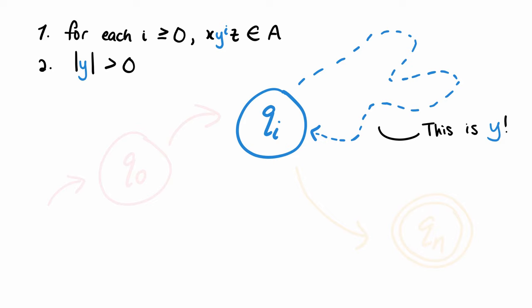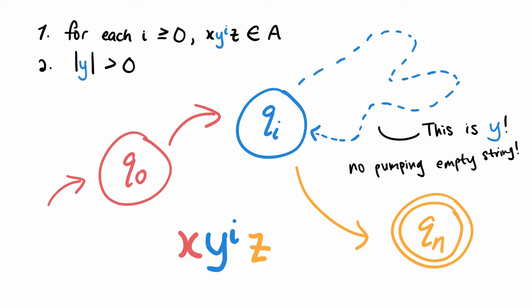The second point says that the length of Y has to be greater than 0, which means we cannot pump the empty string. So if we look at each string as three parts X, Y, Z, the part Y being pumped cannot be empty, but X and Z which are the parts before and after the pumped string can be the empty string. And we saw this in our examples.